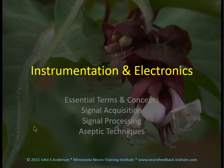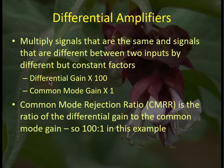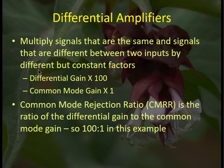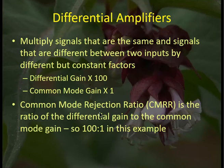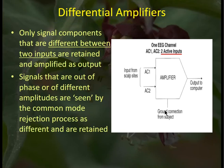Reviewing instrumentation and electronics: differential amplifiers multiply signals that are the same and signals that are different between two inputs by different but constant factors. The positive sensor and negative sensor are each compared to the reference sensor, and then the resulting signals at each input are compared to each other. Anything different gets multiplied by a large number; everything common gets multiplied by a small number — meaning common signals essentially get rejected. This ratio is called the common mode rejection ratio, in this example 100 to 1. Both inputs are referenced to the ground connection from the subject.